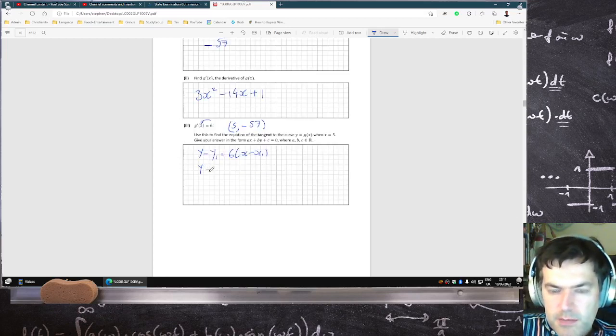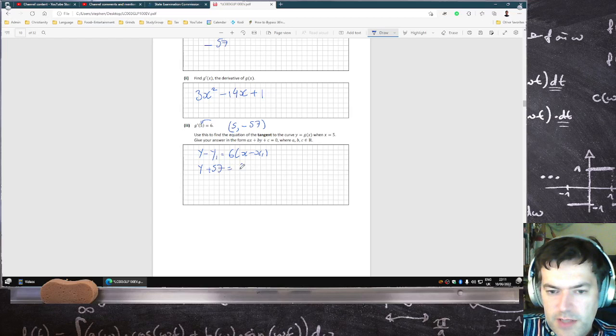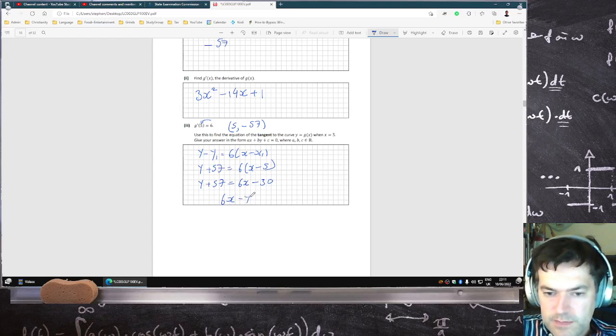So you have y plus 57 equals 6 times x minus 5. That's y plus 57 equals 6x minus 30. So that means 6x minus y minus 87 equals 0.